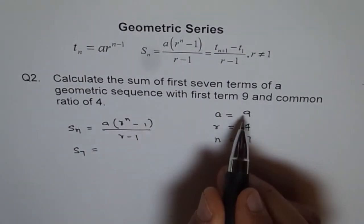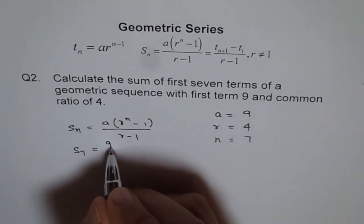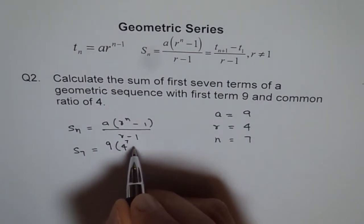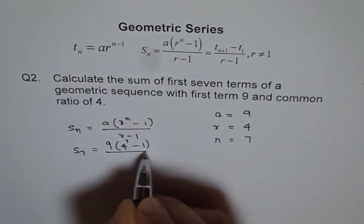equals A is 9, R is 4, to the power of 7 minus 1, divided by 7 minus 1.